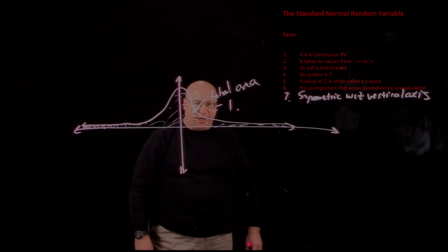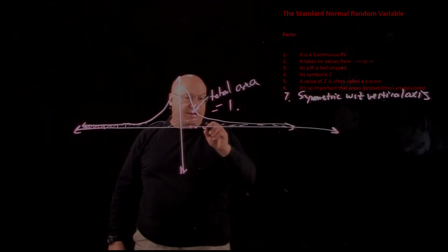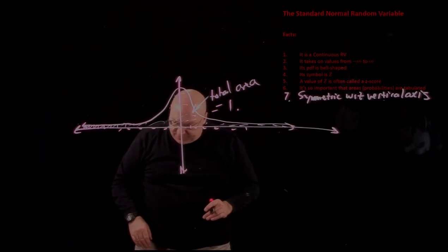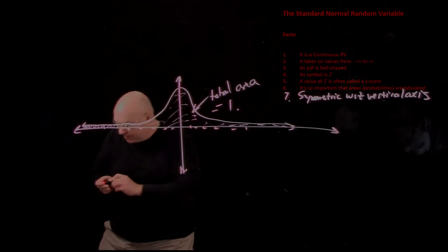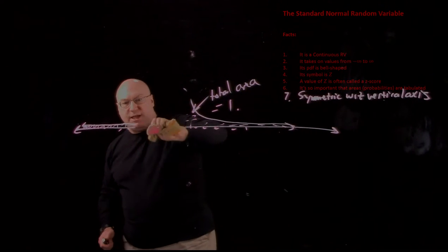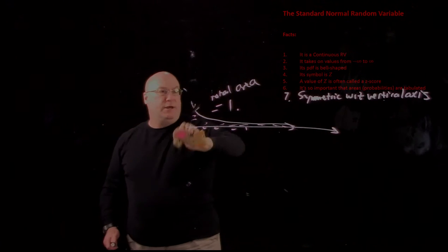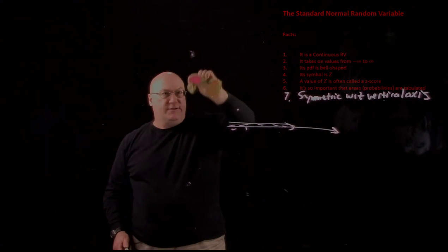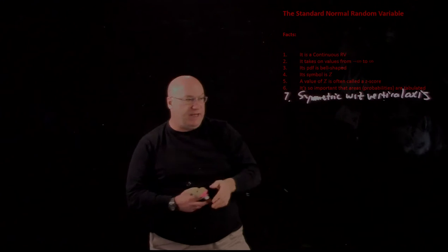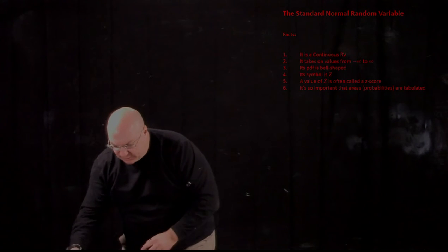What must be true is that the total area equals the total probability for all possible values of this random variable, so it's got to be 1. Even though this shape stretches from minus infinity to infinity and sits above the horizontal axis — which you should now call the z-axis — the total area is finite. The z-scores are along this axis, and the probability density is this curve.